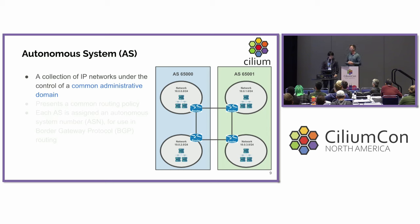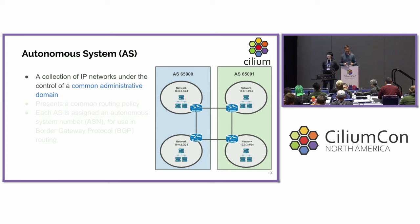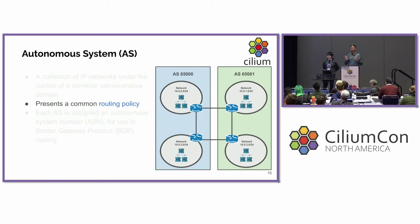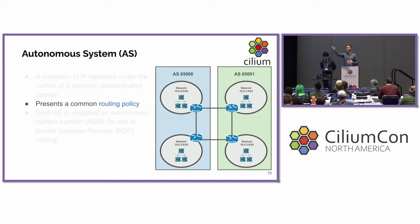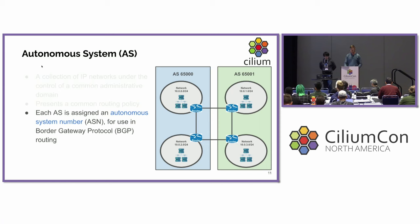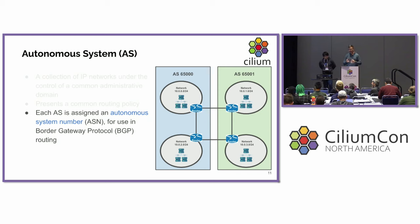Now I want to talk about autonomous systems. This is a higher layer of abstraction than a network number and mask. An autonomous system is a collection of networks under a common administration or administrative control, and it presents a common routing policy. You may be a large enterprise with thousands of locations and thousands of networks, but you as an enterprise have a common policy for how you exchange routing information with other enterprises or with your internet service provider. Each autonomous system has an autonomous system number assigned by internet authorities, and that autonomous system number is used by BGP.